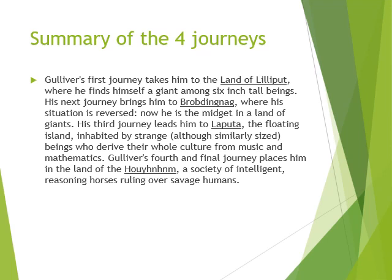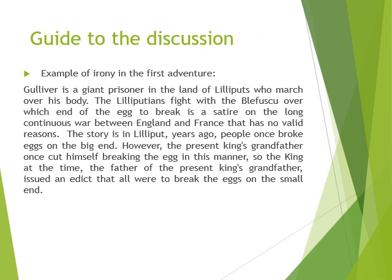In the third journey, Swift is satirizing the Enlightenment with its focus on reason. The final journey is in the land of the Houyhnhnms, a society of intelligent, reasoning horses. The intelligent creatures are horses and the unintelligent, savage creatures are humans — another role reversal to show that human beings are wicked, foolish, and filthy. A number of examples of satire and irony used in the novel across all four adventures are included, and you can choose any of these.